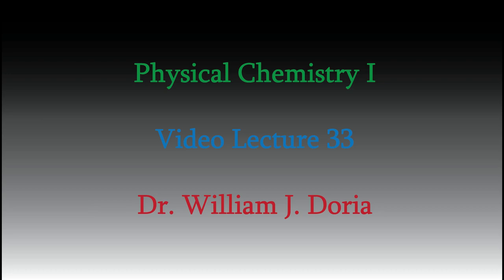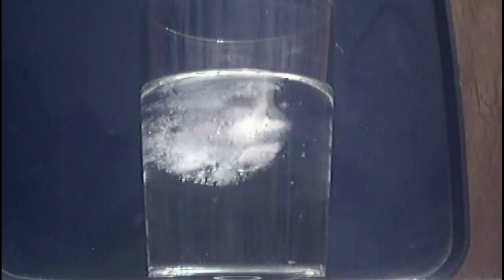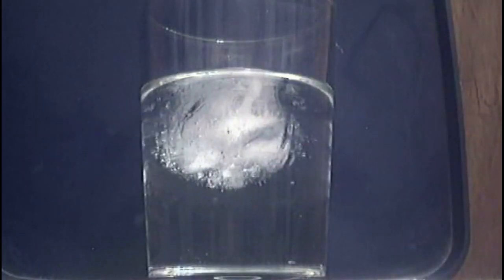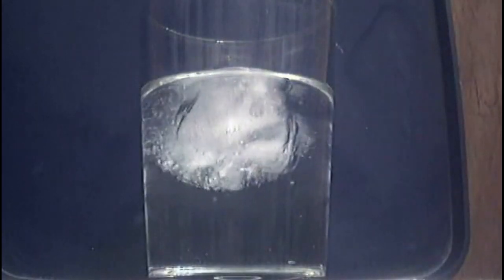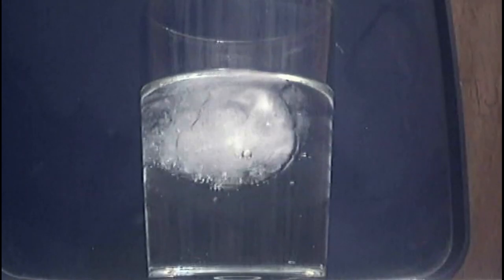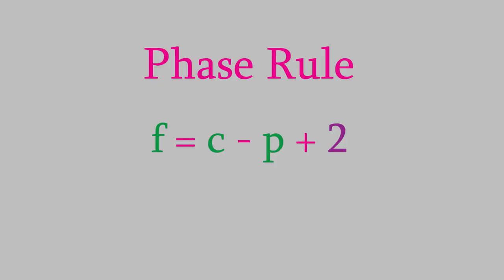Hi, and welcome back to my videos for Physical Chemistry 1. In the last few videos, we looked at transitions between phases and the way the thermodynamic properties of such a transition can be calculated. We also saw the phase rule, which involves both the number of phases and the number of components in a system. Today, we'll start to talk about a very common situation in which a system will have more than one component, and that's systems that are made of a solution.